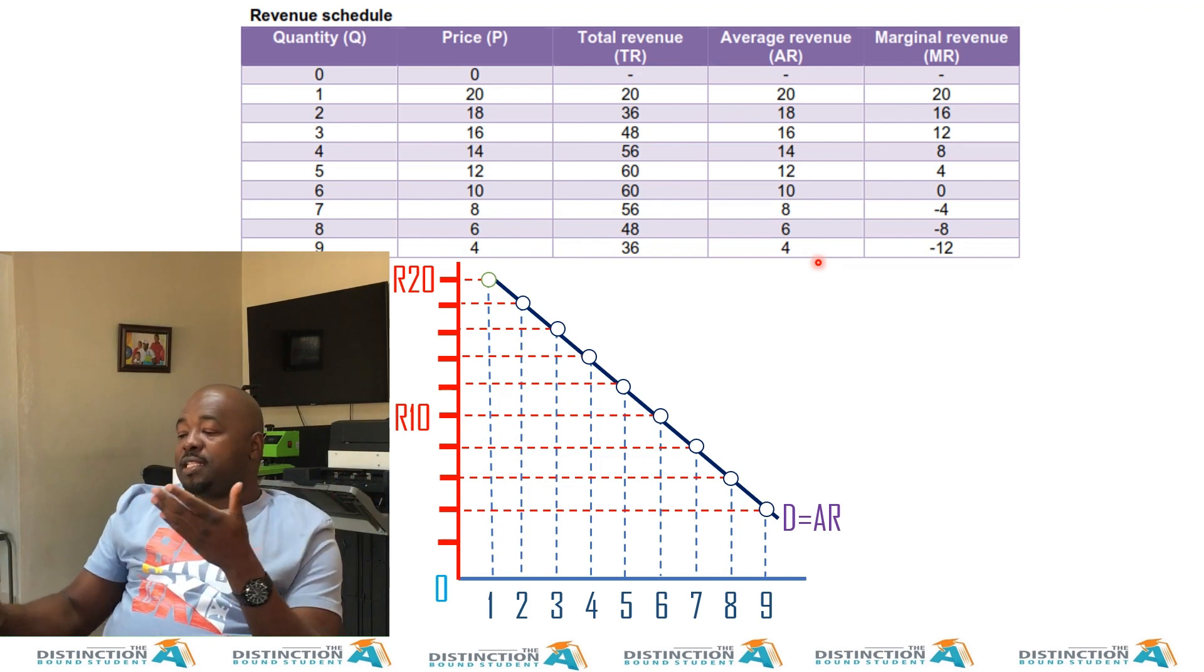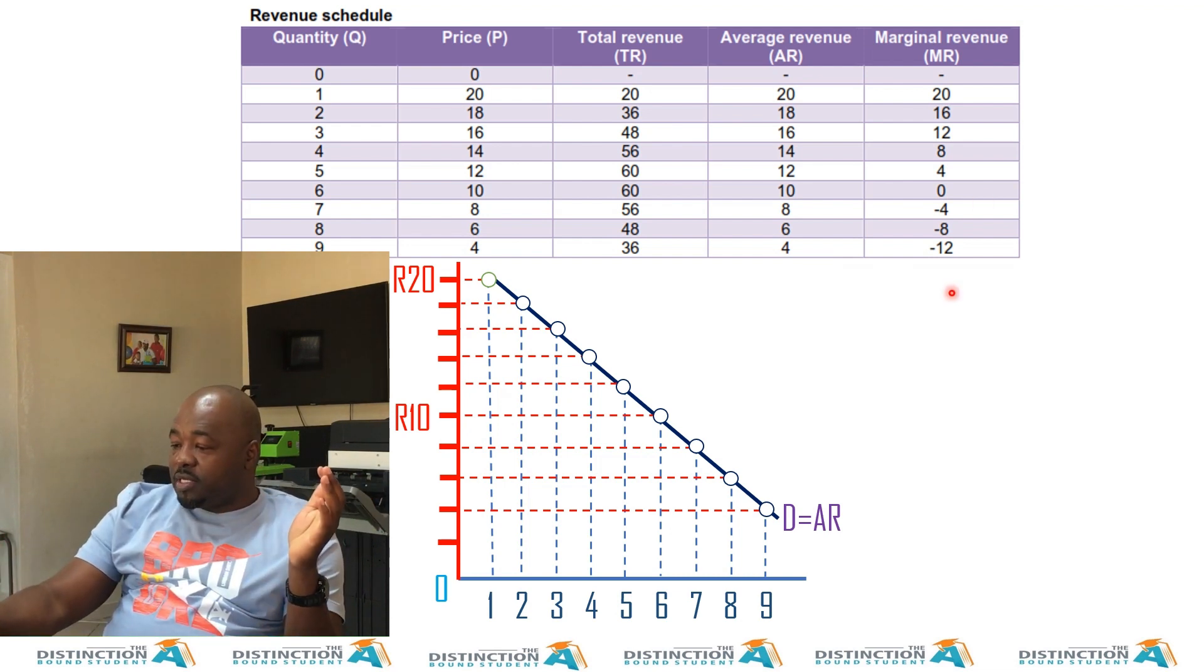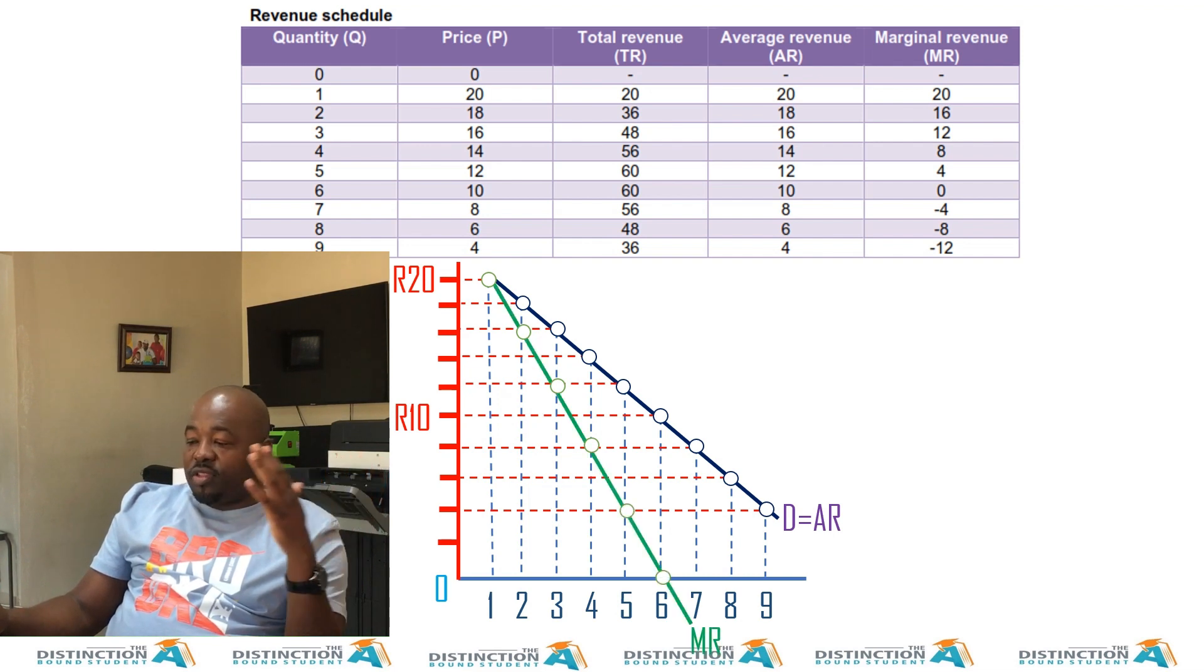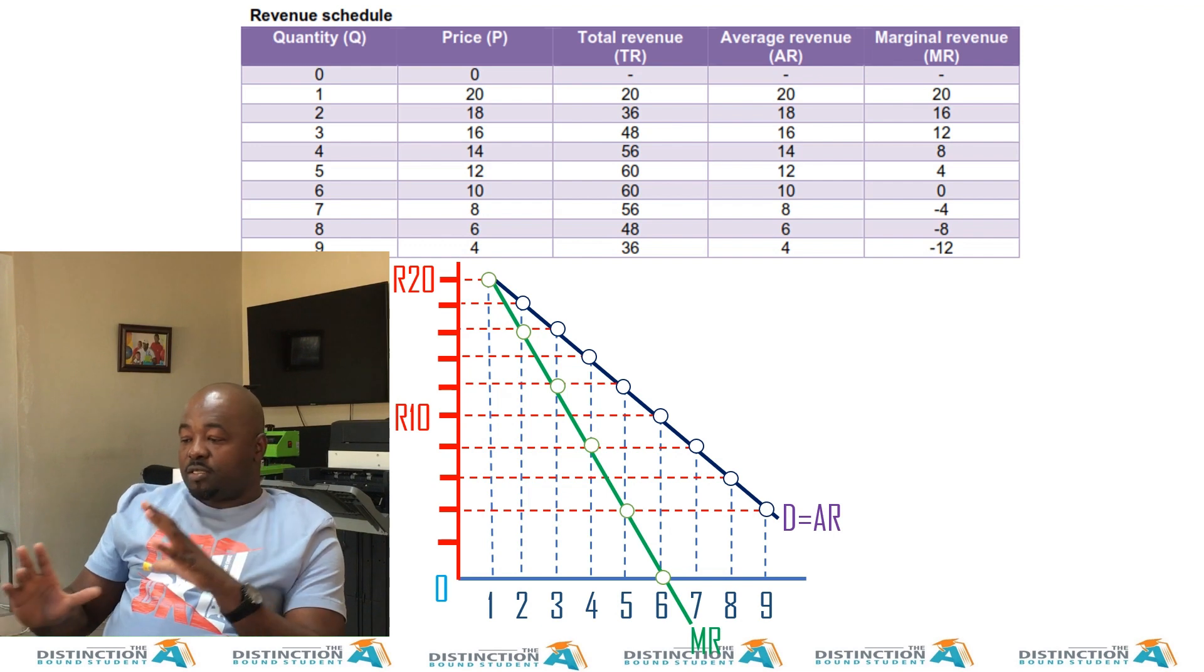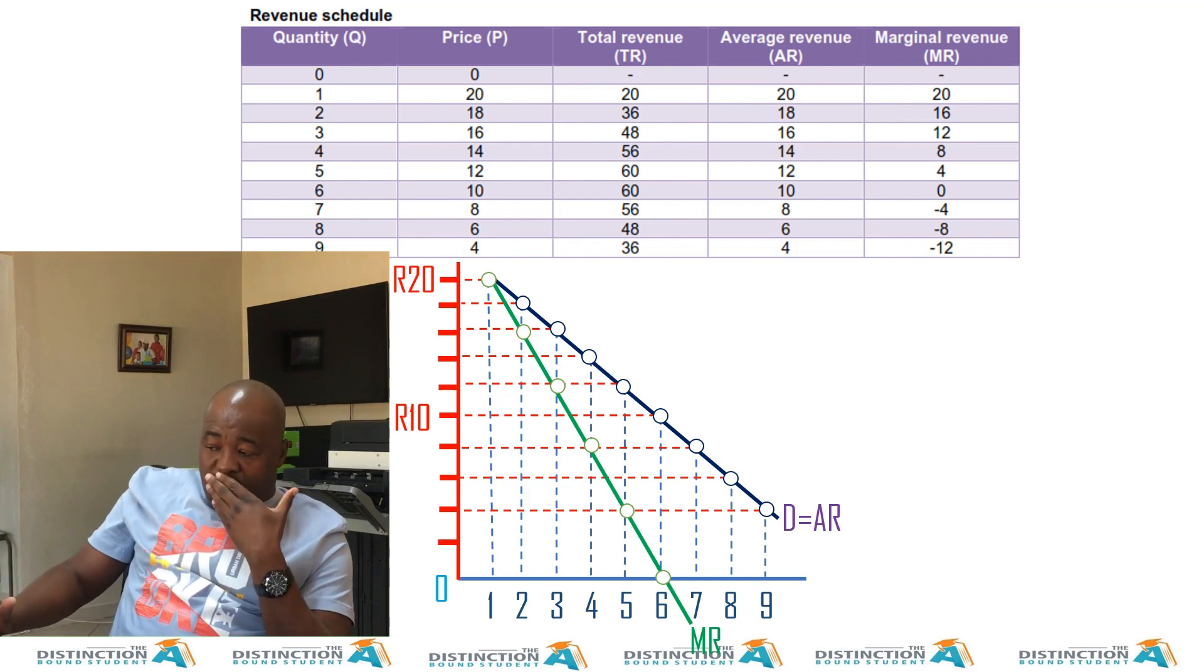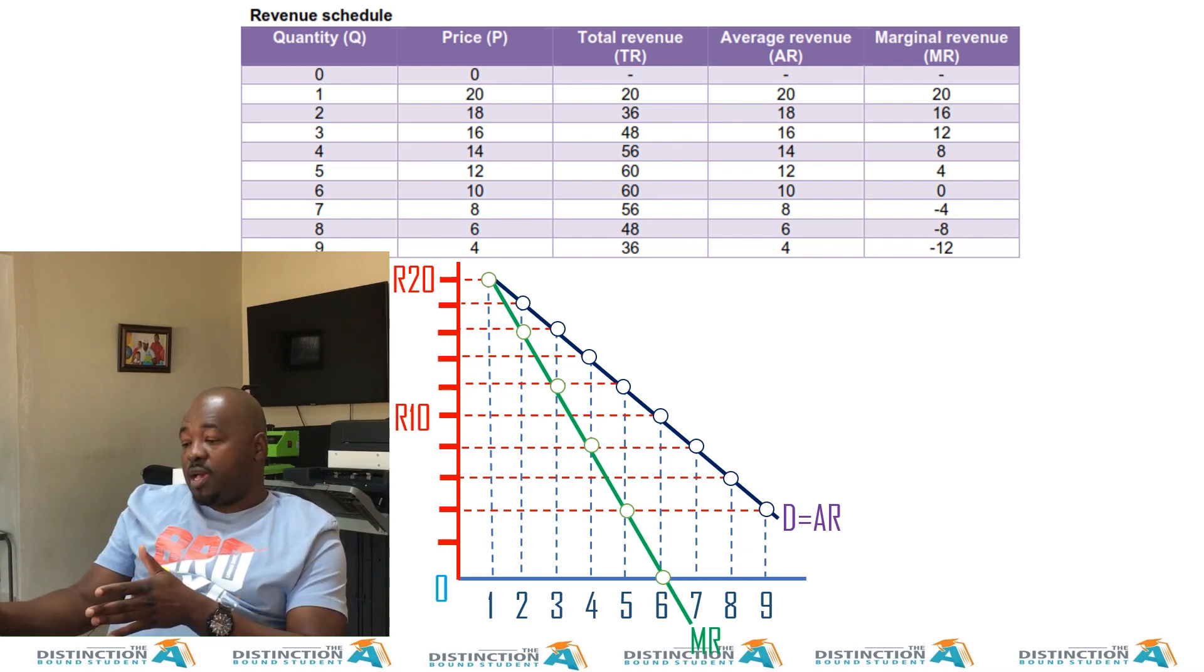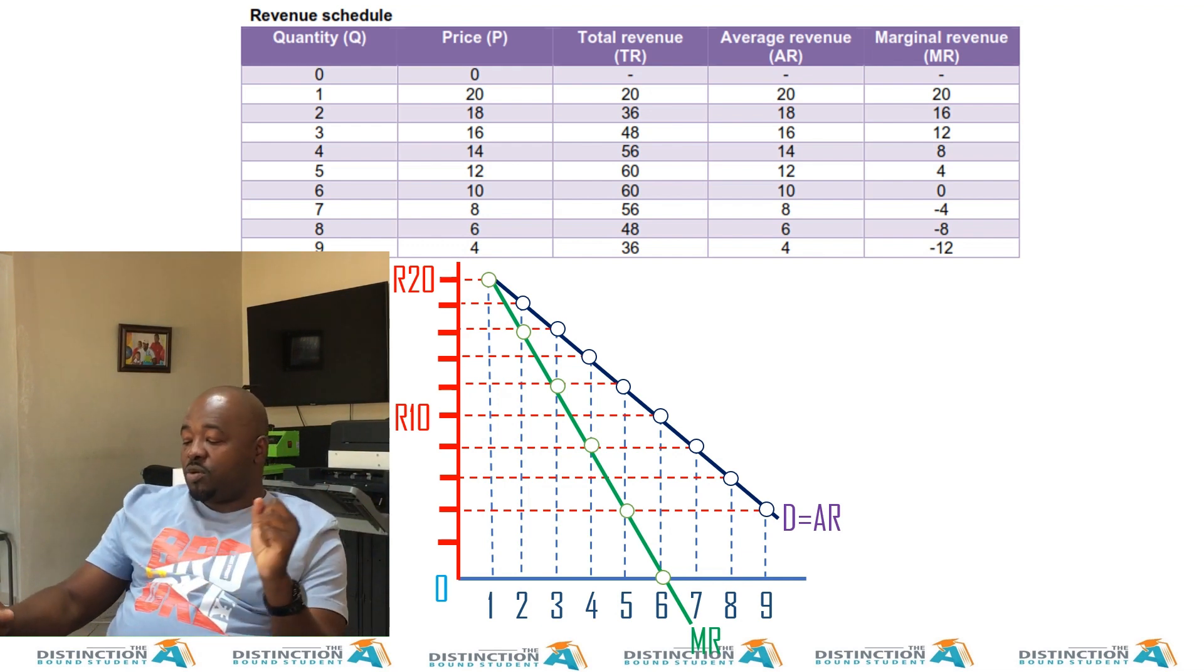So that being said, let's now take these numbers and construct a curve. You see my dots going down, and then until we have our marginal revenue curve in green. This brings us to why our demand curve is equal to AR and why they are not equal to MR.